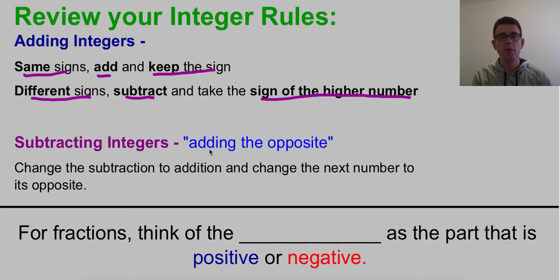For subtracting, remember our phrase: adding the opposite. We're going to change the subtraction to addition and then change the next number to its opposite. So subtraction becomes addition and the very next number becomes the opposite. If it's positive, it's negative. If it's negative, it's positive. Make sure those are written down in your notes.